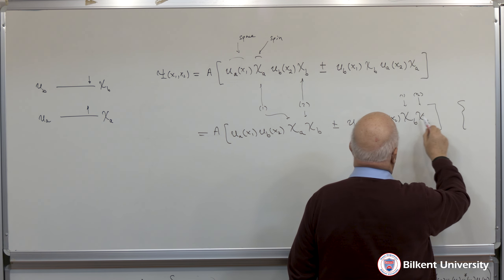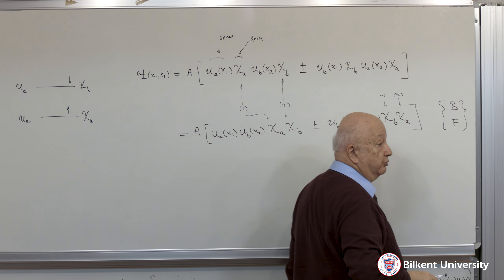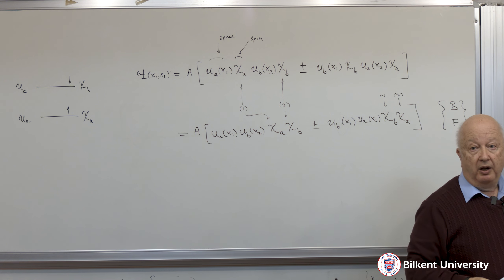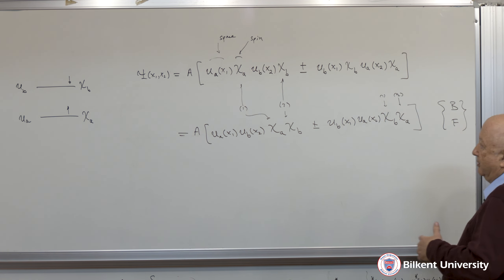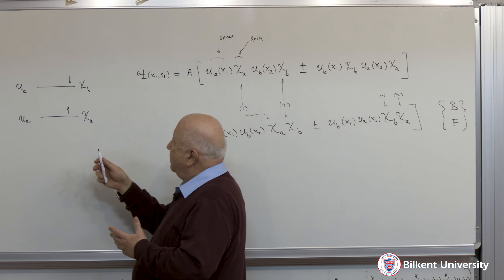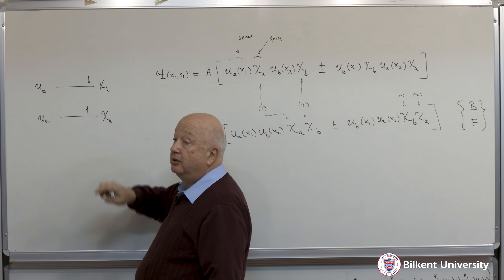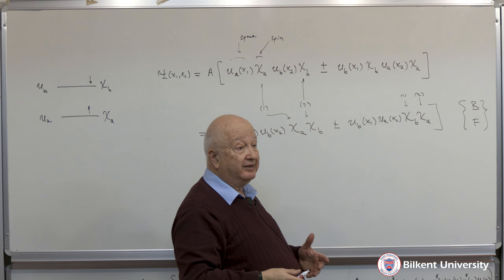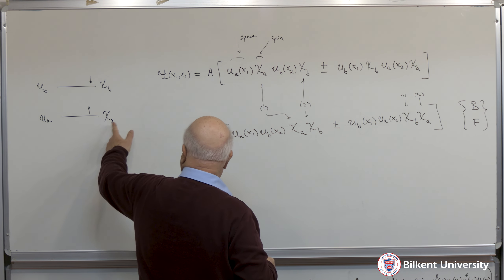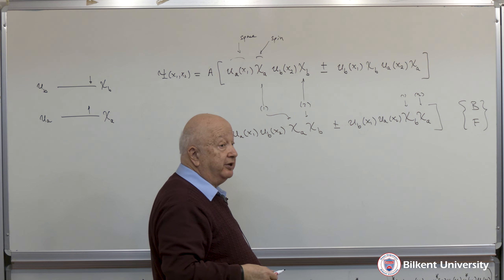If it is the upper sign it's the symmetric case, so it's a boson. If I have fermions, I have to use the minus sign. Now, under certain circumstances, we do not really care or know — depending on the problem — what the individual spin states are, except that we are going to get either a symmetric or an anti-symmetric spin state.